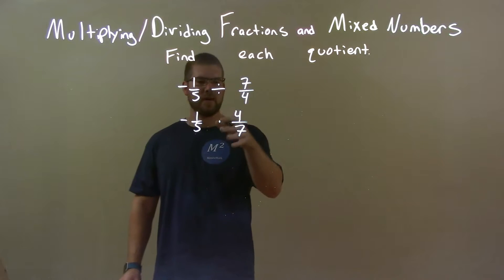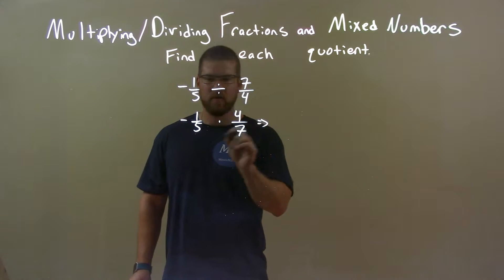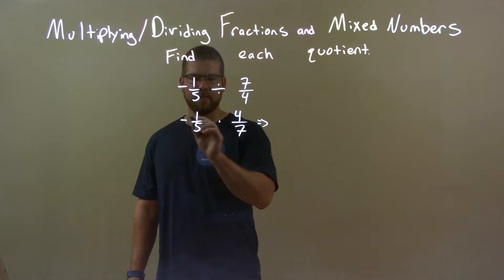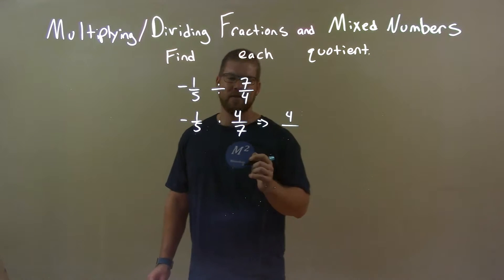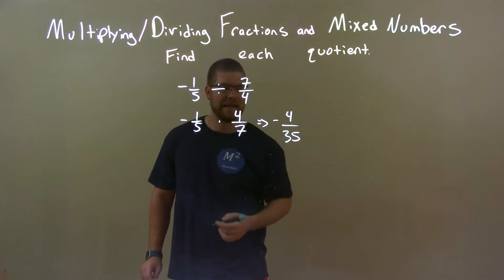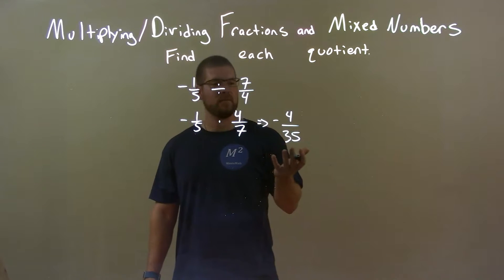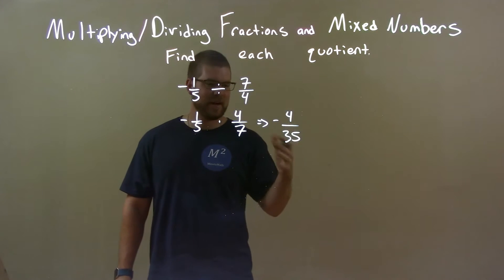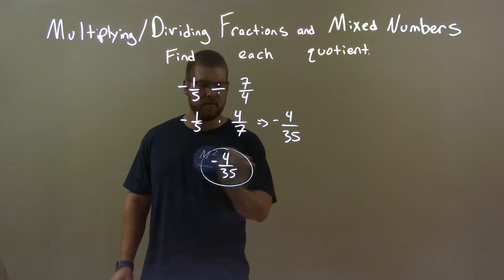So now I have negative one-fifth times four over seven. This, I find, is easier. Multiply across the numerator, and then the denominator. One times four is four. Five times seven is thirty-five. Keep it a negative. Negative times a positive is a negative. So we have negative four over thirty-five. Can these numbers simplify? Nope. They can't simplify anymore. So our final answer is negative four over thirty-five.